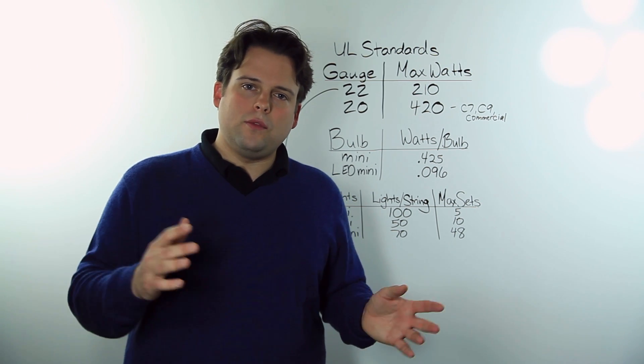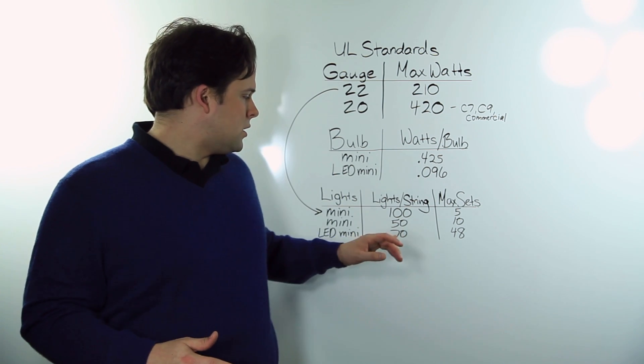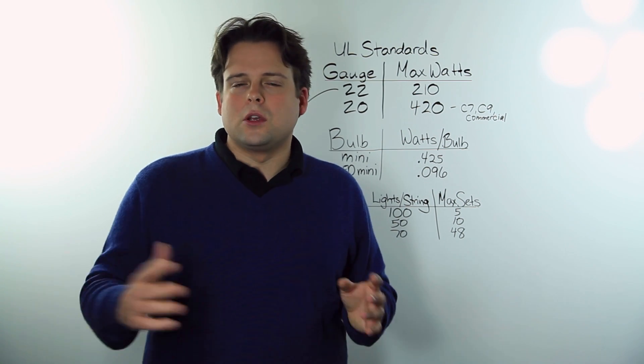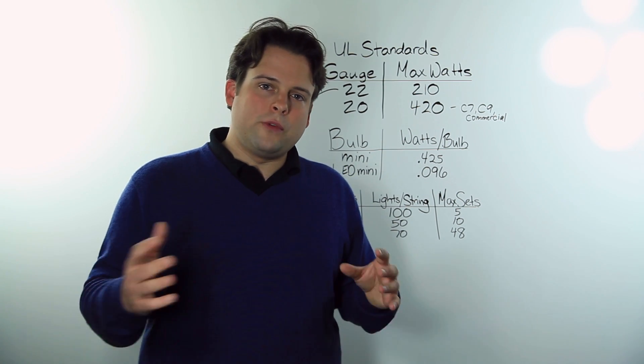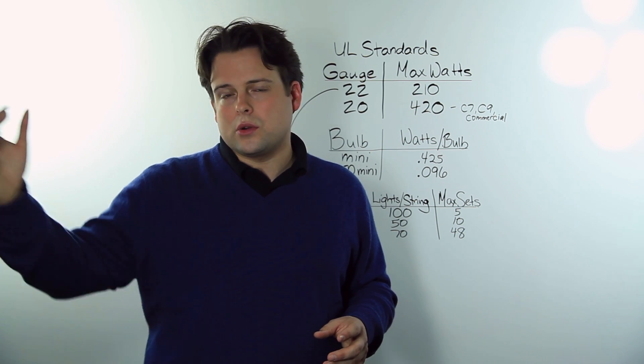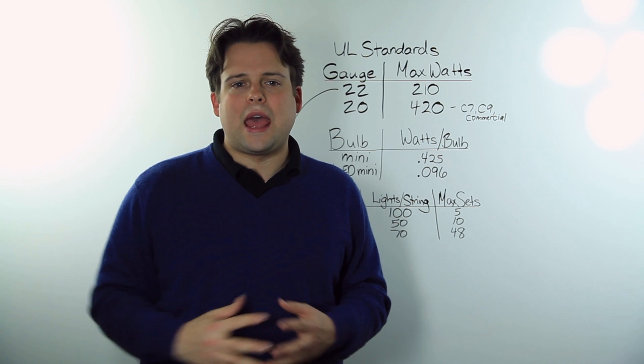In comparison, if you are working with LED light strings, you can connect up to 48 sets of a 70-count wire. So you could connect up to 48 sets at one time, or 10 sets of incandescent, or even potentially as little as 5 sets of incandescent lights at one time.